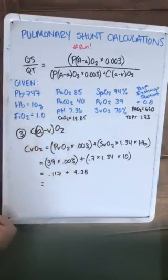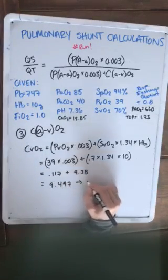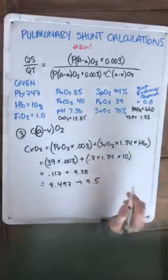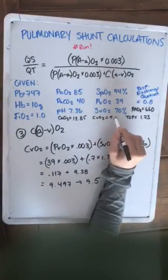Add those together and get 9.497, which I'm just going to do 9.5. So our CVO2 is 9.5.